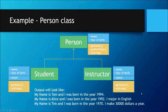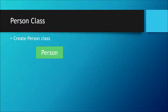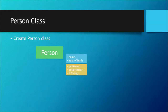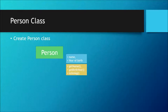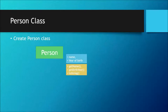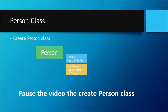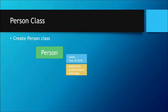Now open up BlueJ or Eclipse. First, let's create the Person class. Person will have a name and year of birth, and three methods: getName to return the name, getBirthYear to return the year of birth, and toString to print name and year of birth. This is your basic class — you know how to create a class with instance fields, constructors and methods. Go ahead and complete your Person class, then come back to watch instructions on creating the Student and Instructor classes.